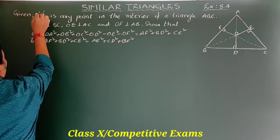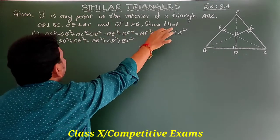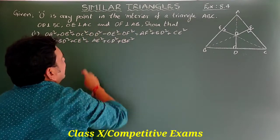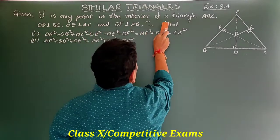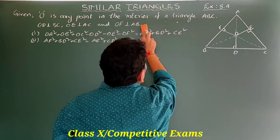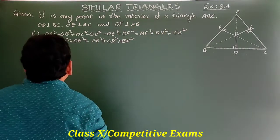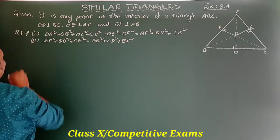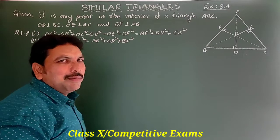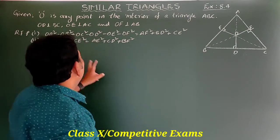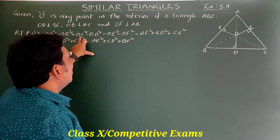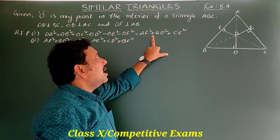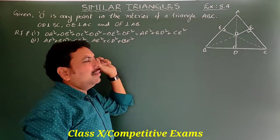Given: O is any point in the interior of triangle ABC; OD perpendicular to BC; OE perpendicular to AC; OF perpendicular to AB. We need to prove: OA² + OB² + OC² − OD² − OE² − OF² = AF² + BD² + CE².